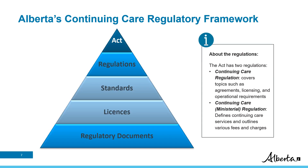Alberta Health is responsible for public assurance of Alberta's continuing care system. The Licensing and Compliance Monitoring Branch is the regulatory arm for Alberta's continuing care system. The framework provides the structure around which all regulatory activities take place. It includes the laws — that being the Continuing Care Act, regulations, and standards — which provide the guidance used to regulate the various parts of the continuing care system that fall within the scope of authority.